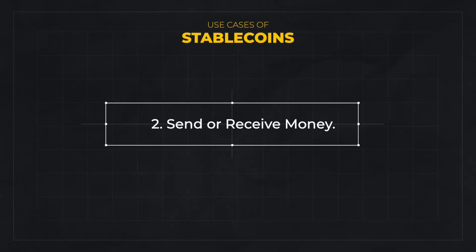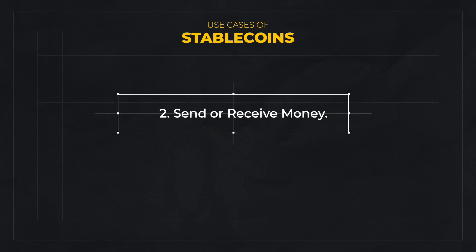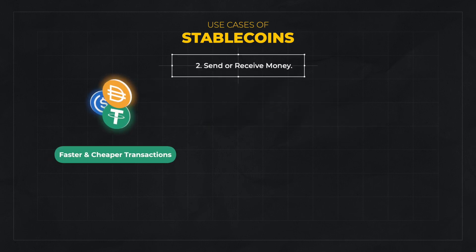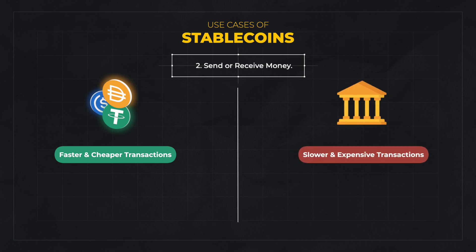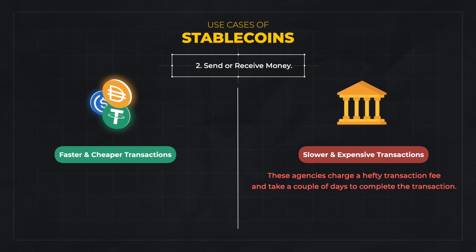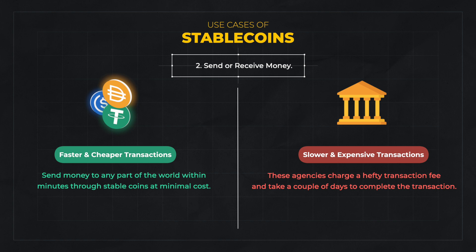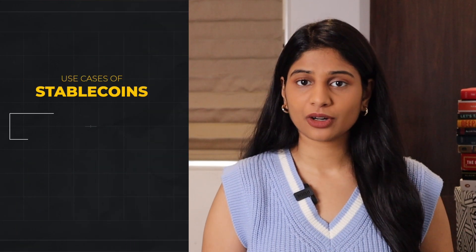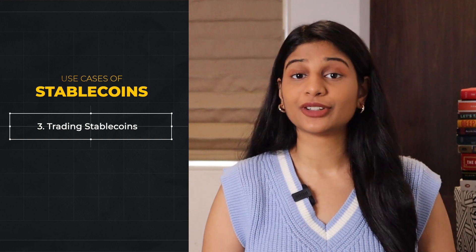The next use case is to send or receive money. For international transactions, stablecoins are faster and cheaper than transactions done through banks or centralized financial institutions. These organizations charge hefty fees and take a couple of days to complete a transaction. Using stablecoins, money can be sent within minutes to any part of the world with minimal fees on certain blockchains.